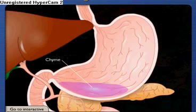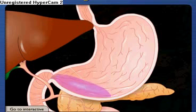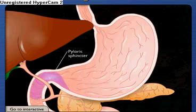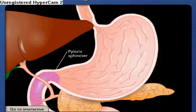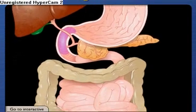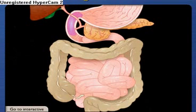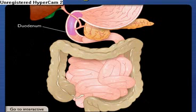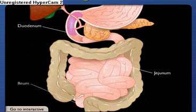Chyme exits the stomach through the pyloric sphincter and enters the small intestine, the major site of nutrient absorption. The small intestine consists of three parts: the duodenum, jejunum, and ileum.